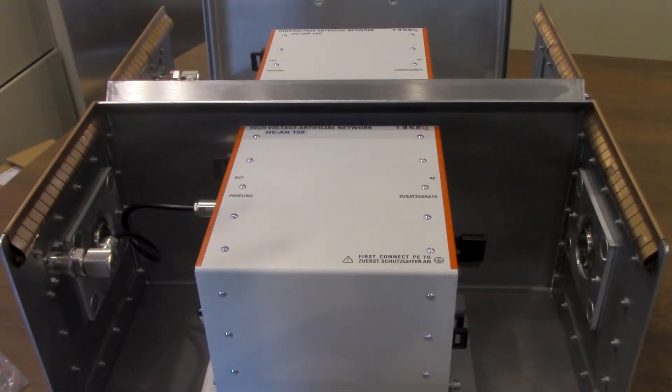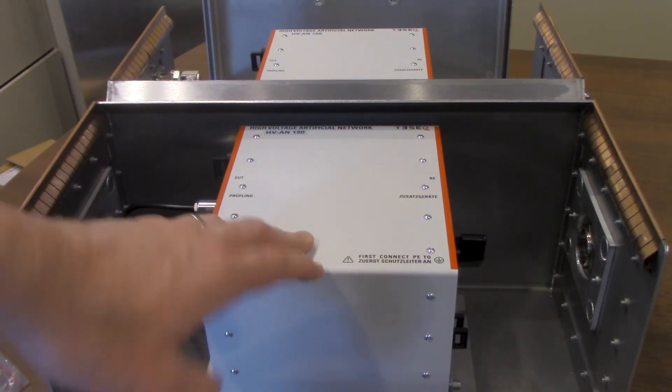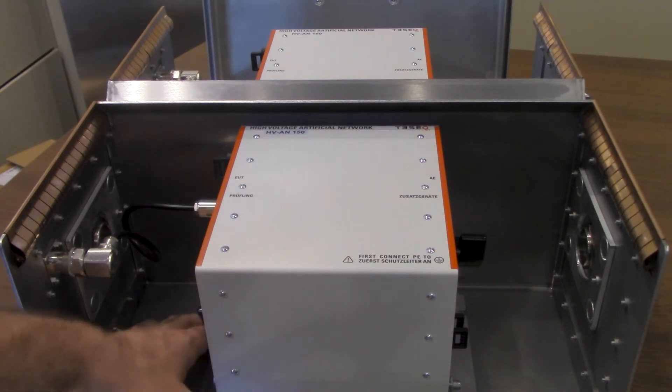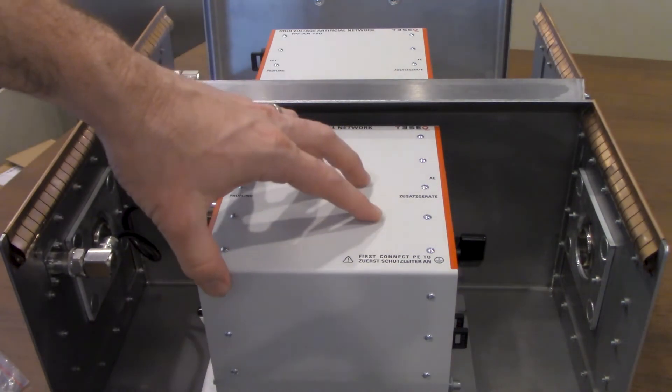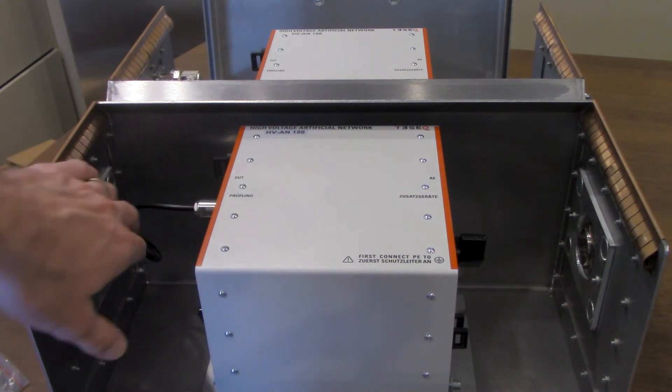All we've done so far is we've put our HVAN 150 in our shielded metal enclosure which for the TESEC HVAN 150 is called the SME HVAN 150. There's a couple different connections. You have the connection down here, I'm not sure you can see it on the backside here, two on each side of the listen and those are going to connect the listen to the shielded metal enclosure. You want to make sure it's done on both sides as well as your connection right here.